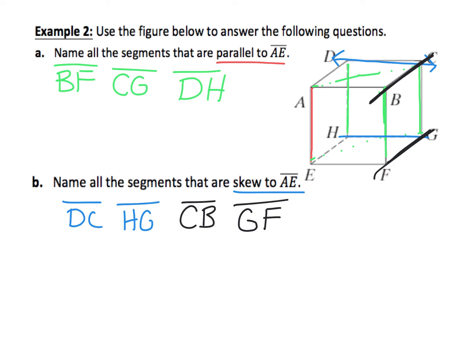If you try some of these other segments, they're going to either intersect AE or they're in the same plane as AE. So notice how EF doesn't work. Neither does HE because they cross AE. Same with AD. AB crosses. When you list all the segments that are parallel and all the segments that are skew, that should cover all of the segments that never cross AE.